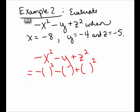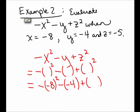In the first set of parentheses I need to put the value of x, which is negative 8. In the second set of parentheses I need to put the value of y, which is negative 4. And in the third set of parentheses I need to put the value of z, which is negative 5.